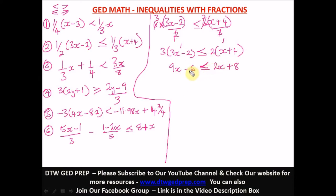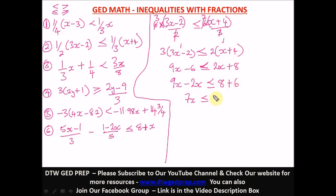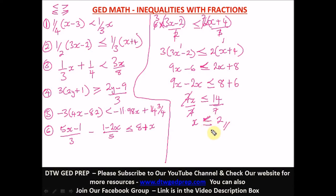Collecting like terms: bring 2x to the left side as negative 2x, and bring negative 6 to the right as positive 6. So 9x minus 2x gives 7x, and 8 plus 6 gives 14. We divide both sides by 7: x is less than or equal to 14 divided by 7, which is 2. Answer: x ≤ 2.